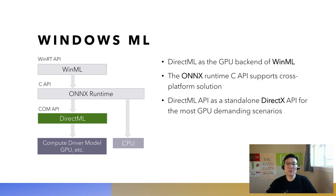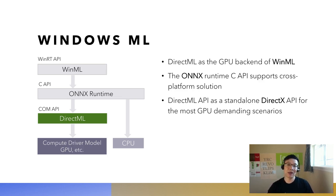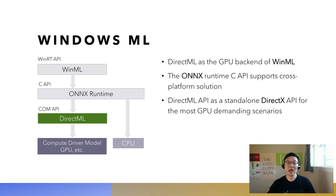DirectML is used as the GPU backend for the Windows ML API to accelerate ONNX operations on the GPU. Windows ML is an easy-to-use model loader API that supports many major apps on Windows today. The open source ONNX Runtime C API makes DirectML functionality available to developers building cross-platform solutions. DirectML itself is also available as a standalone API in the DirectX API family for the most demanding scenarios where frame-over-frame performance is critical, such as in real-time or gaming scenarios.